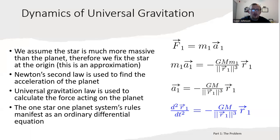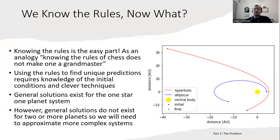The one star, one planet system's rules manifest as an ordinary differential equation, because acceleration is the second time derivative of position. So that's this blue equation down here. Okay, so we know the rules. Now what?